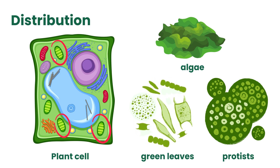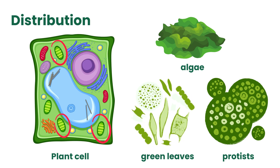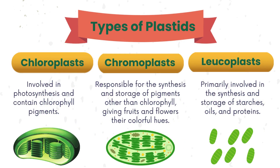Plastids are a family of organelles found in plant cells. They include chloroplasts, chromoplasts, and leukoplasts. Chloroplasts engage in photosynthesis and contain chlorophyll pigments. Chromoplasts handle pigment synthesis and storage, providing fruits and flowers with their various colours. And leukoplasts are mainly involved in synthesising and storing starches, oils, and proteins.